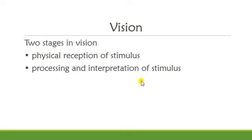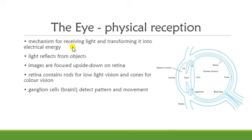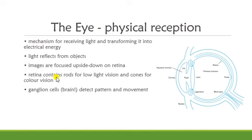When we look at something, that is when we receive the stimulus. When we process it — for example, recognizing 'this is a television' — that is when we interpret what the stimulus means. Vision begins with light. The UMA eye is a mechanism for receiving light and transforming it into electrical energy. The light reflected from objects we are looking at enters the eye, and it is important to know that images are focused upside down on the retina. The retina contains rods for low-light vision and cones for color vision.